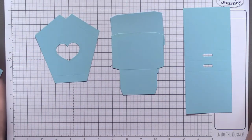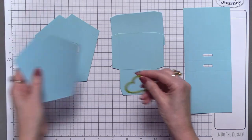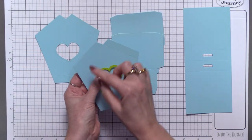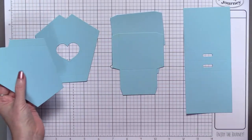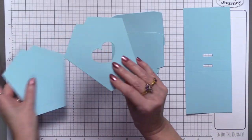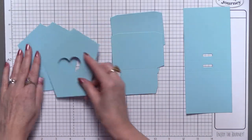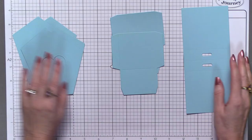What you're going to do is you have the freedom to die cut any opening you want. You can go with a heart, a traditional circle, star, any shape you want, and it will look like this.